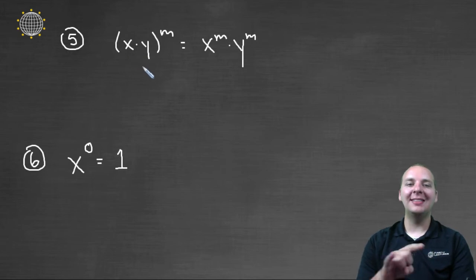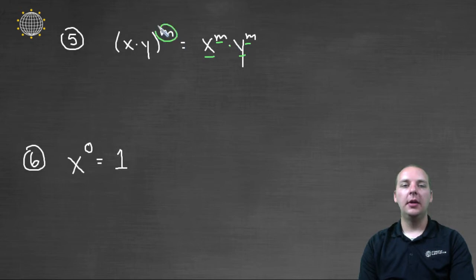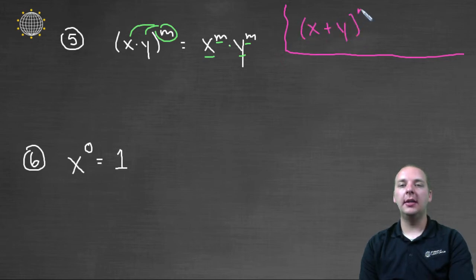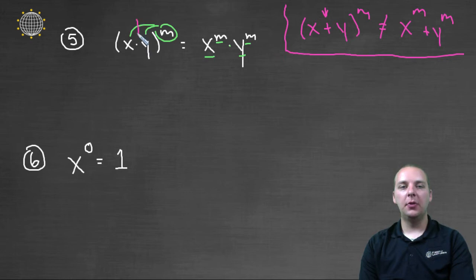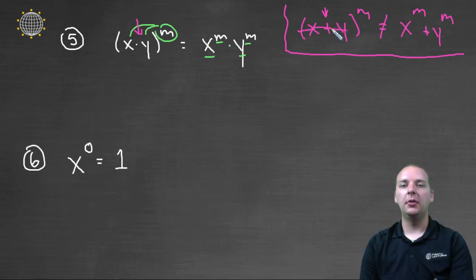What if we have different bases, x times y, all raised to the mth power? Then this would be x to the m times y to the m — the m distributes over multiplication. A quick caution: this is a very common mistake. If you have x plus y to the m, you absolutely cannot distribute to get x to the m plus y to the m. This is addition and that is multiplication. Powers split over multiplication; they do not split over addition. Be really careful about that because it's a super common mistake.